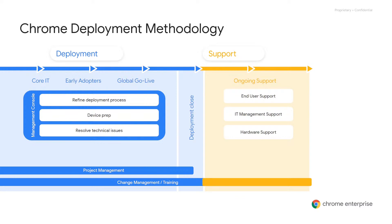Throughout the deployment process, it's really important to know who your core IT user groups are, who your early adopters are, and making sure that you have a conducive global go live date. As you're going through the management console and redefining your deployment process, it does take a lot of device prep and resolution of technical issues that might come up. The project management of this will typically take three to six months, but every organization is different depending on your use cases.